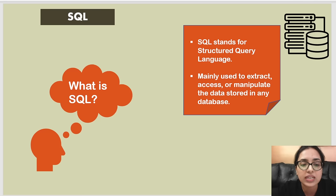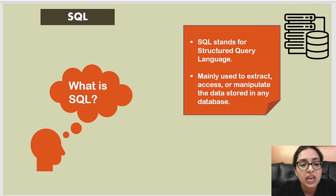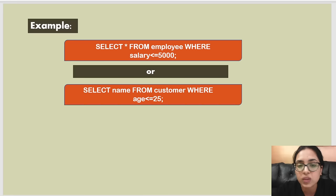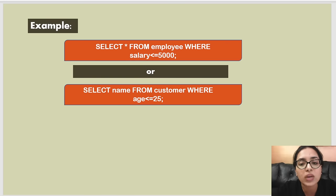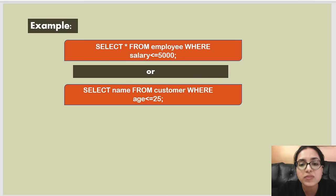Based on their purpose, there are many categories of commands used in SQL, such as Data Definition Language, Data Manipulation Language, Data Control Language, and so on. Here are a few examples of SQL queries: the first query displays the details of employees from the employee table whose salary is less than or equal to 5000; the second displays the names of customers whose age is less than or equal to 25.